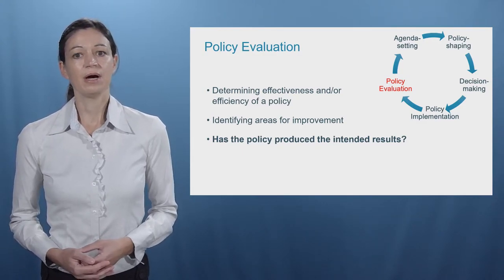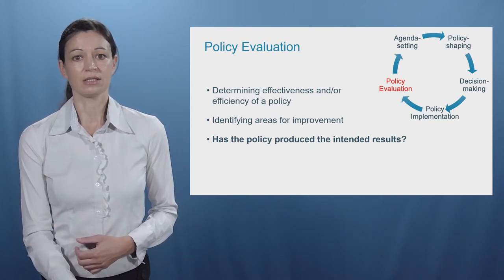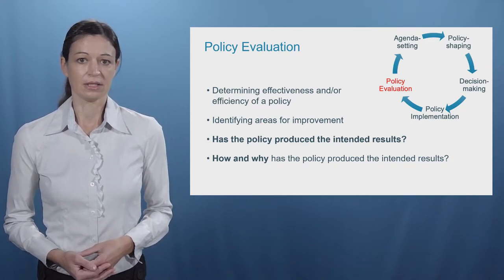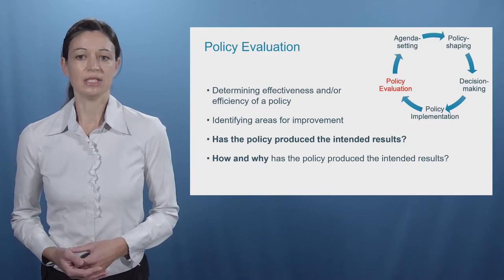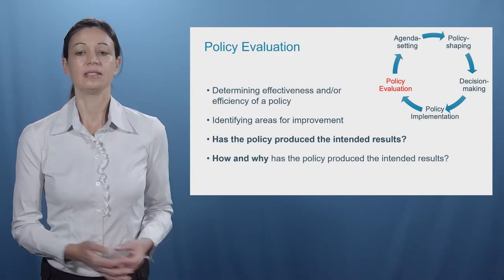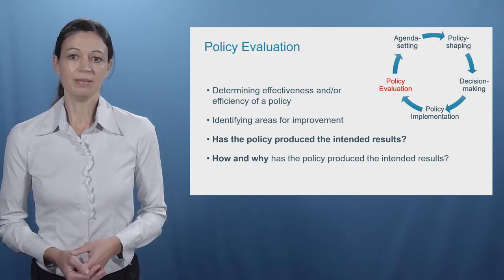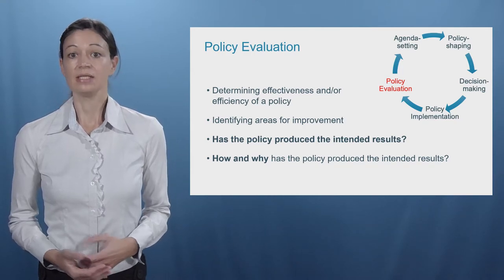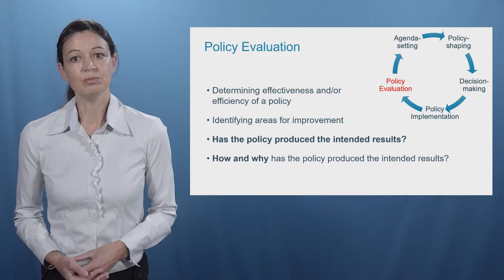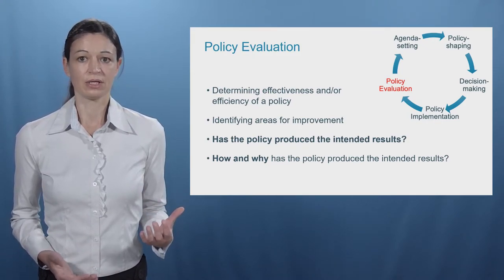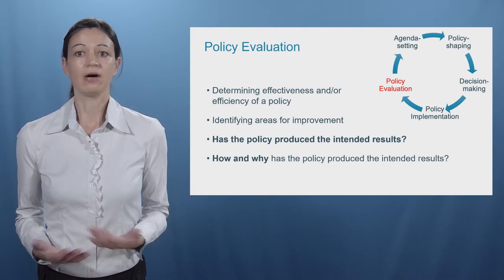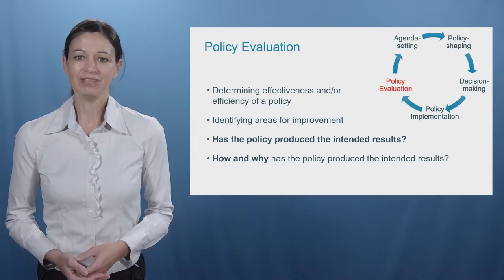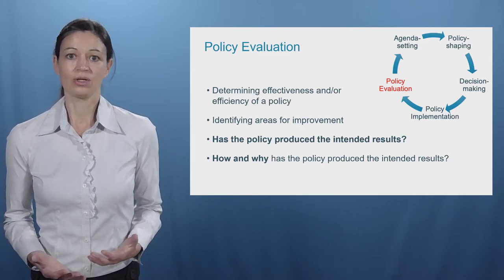Policy evaluation is about whether or not a policy has produced the intended results, but it goes further than that. Policy evaluation is about assessing the impacts of a policy. It tries to uncover how and why a policy has produced the intended results. It is about establishing causality instead of correlation. One example are the 2020 greenhouse gas emissions that dropped significantly. The reduction of greenhouse gas emissions is also subject to a number of policies that aim to mitigate climate change. So if we only observed the 2020 emissions reductions, we could conclude that our climate policies are tremendously effective. Yet, if we analyzed the causal links, we would quickly realize that the COVID-19 crisis and its consequences caused many of the emission reductions.